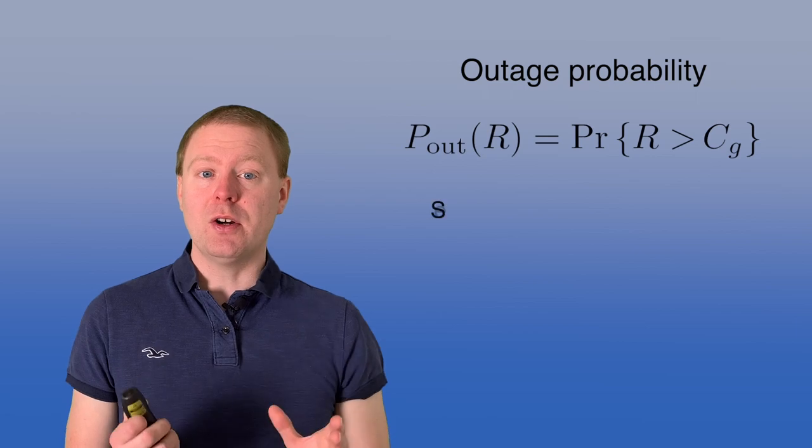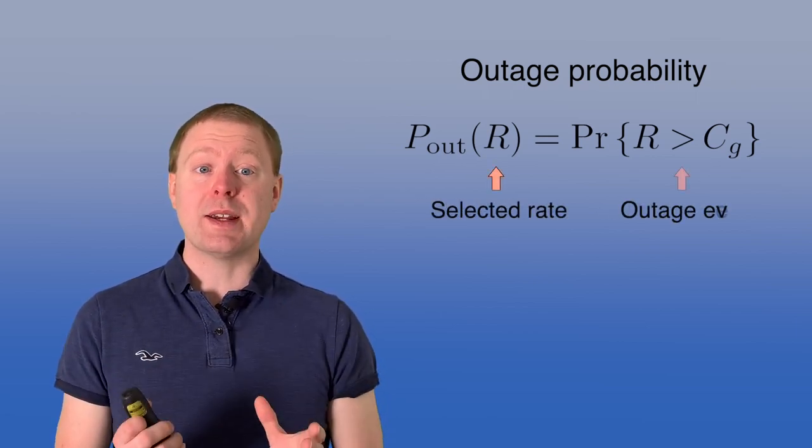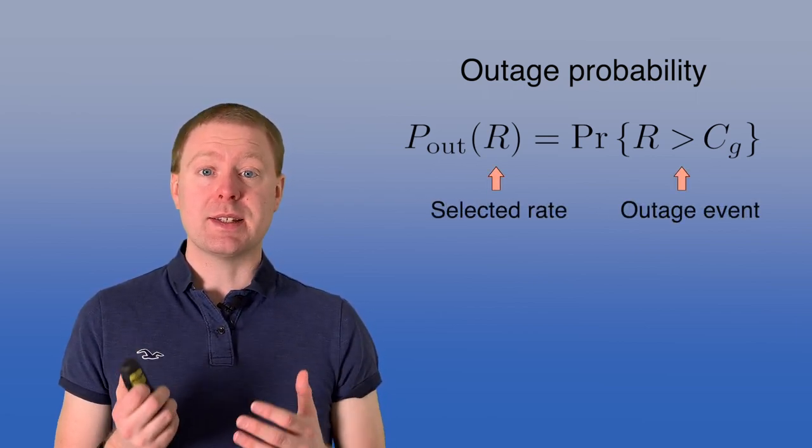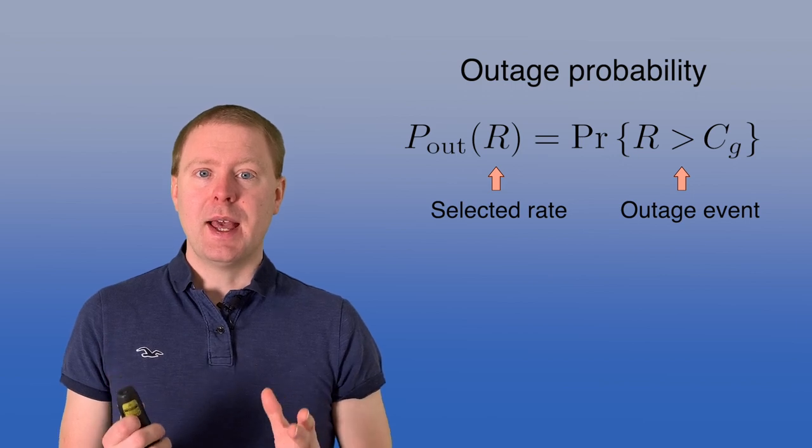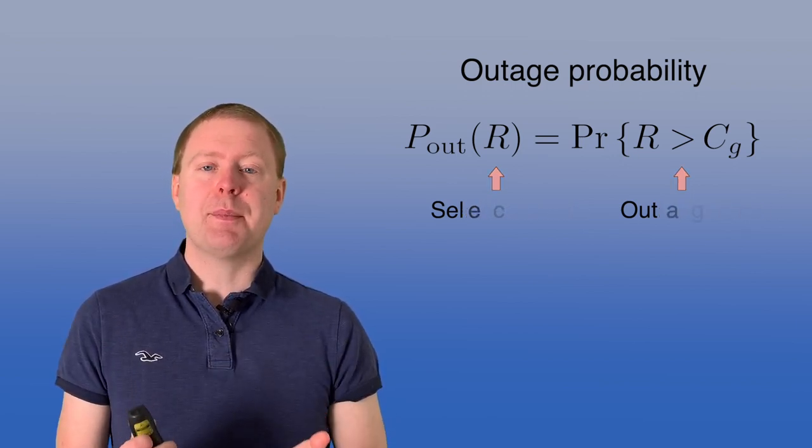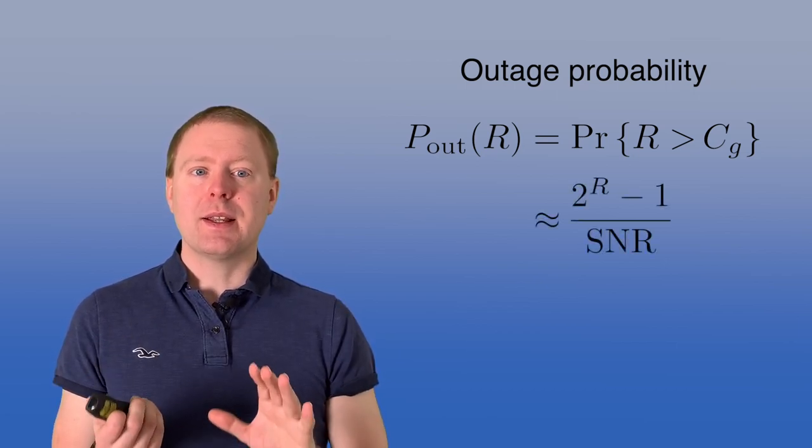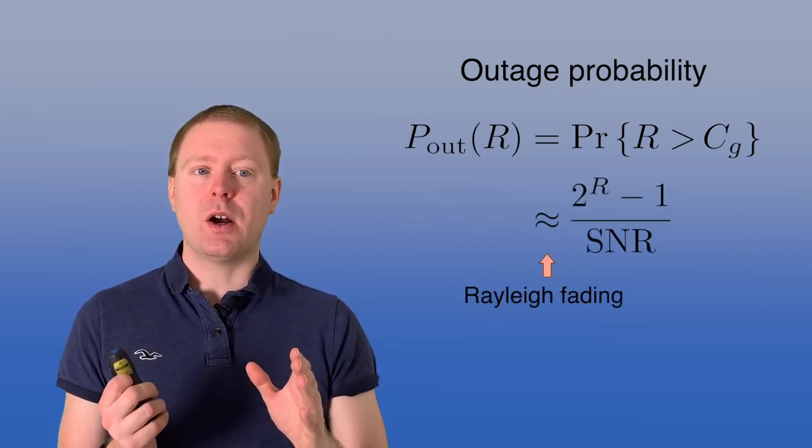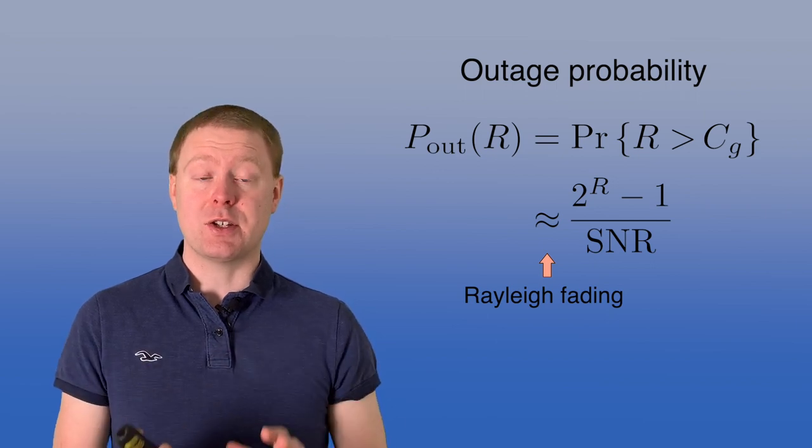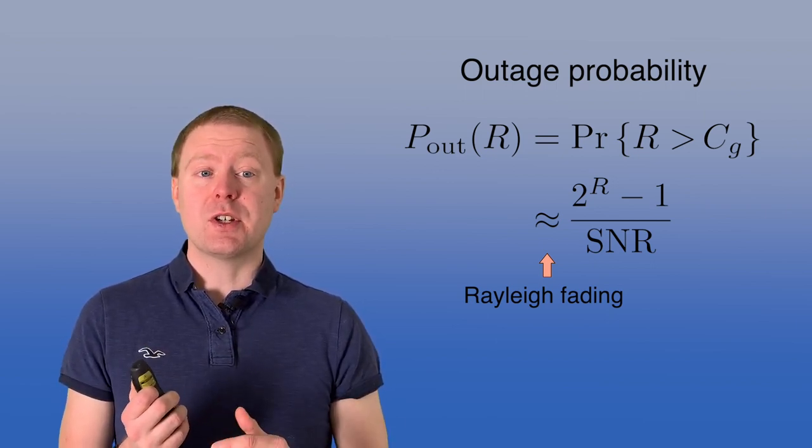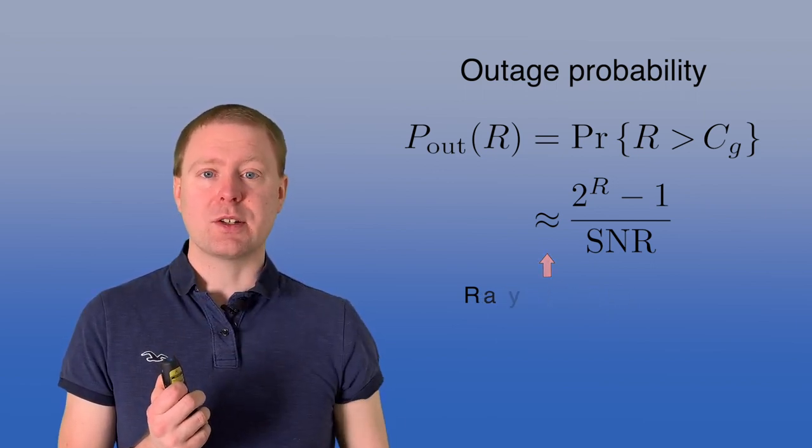We can define the probability of outage, we call it p_out(r), and that's a probability that r is greater than Cg for the realization of g that we were getting. And we can compute it exactly, but the important thing is what happens when the SNR is large. Then we get, under Rayleigh fading, approximately 2^(r-1) divided by the SNR. So the probability of outage goes down as 1 over the signal to noise ratio.